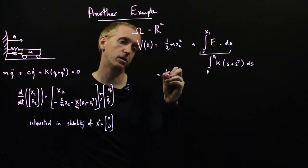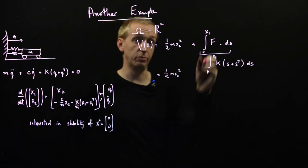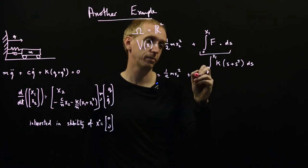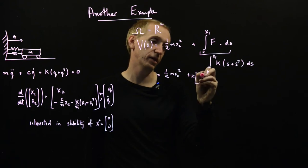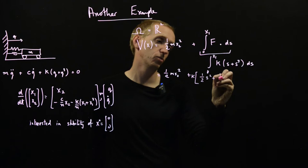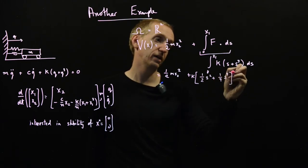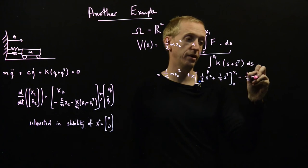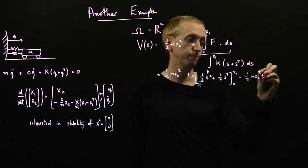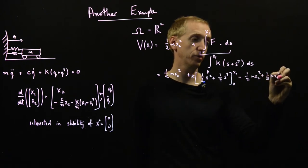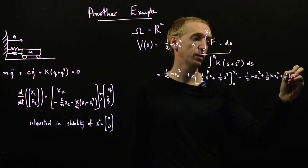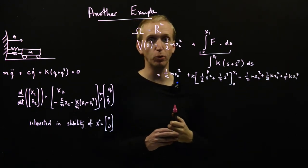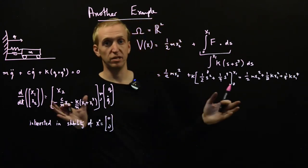And then here we have, we're using our dummy variable s but so our spring is q and q cubed so this is just our spring force integrated with respect to s from zero to x1. And so what do we get? We get a half m x2 squared and then we just have to do this integral it's pretty easy and we just get, we can have a k there and then we get a half s squared plus a half k x1 to the 4. And so this is just equal to a half m x2 squared plus a half k x1 squared plus a quarter k x1 to the 4. And so this is our usual potential energy in a linear spring and here we've got this bonus term coming from our non-linearity. This is our Lyapunov function.